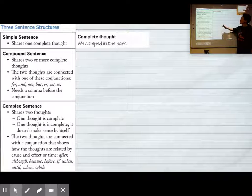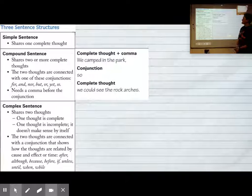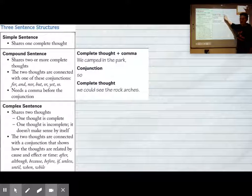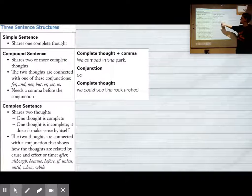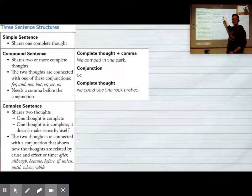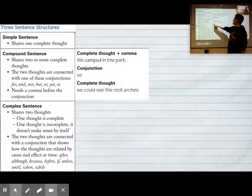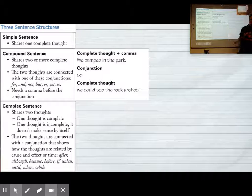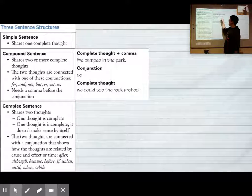A complete thought would be we camped in the park. The compound sentence is the complete thought plus the comma with a conjunction and then another complete thought. In this case it's we camped in the park comma so we could see the rock arches. Two complete thoughts. I could say either one of those as a sentence, but I made a compound sentence by using a comma and a conjunction.